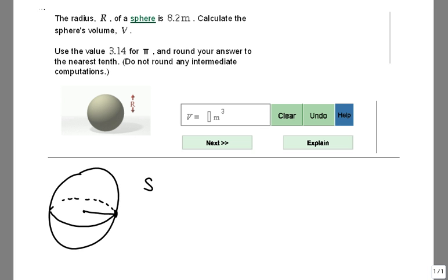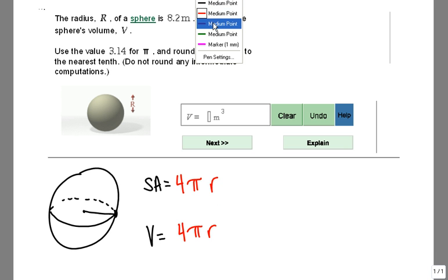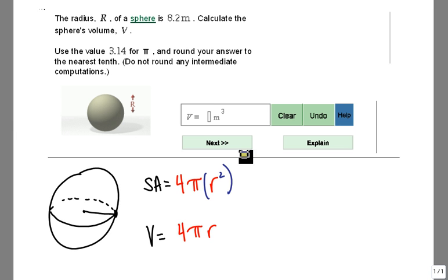The surface area equation and the volume equation are related in a very important fashion. They both start with 4πr. The difference is, for surface area, it's 4πr squared. And you can remember that because area is a two-dimensional concept.